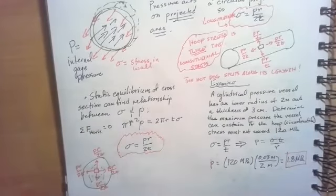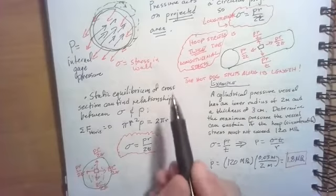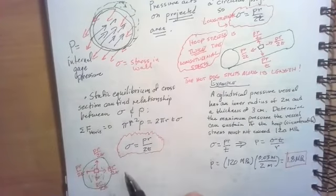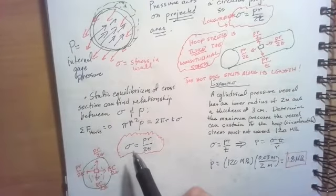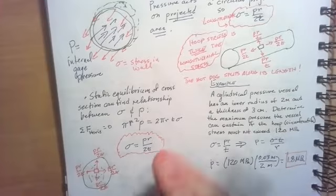The force that's pushing on the cut section should be balanced by the force in the walls. And when I solve for sigma, I find that sigma is equal to PR over 2T.